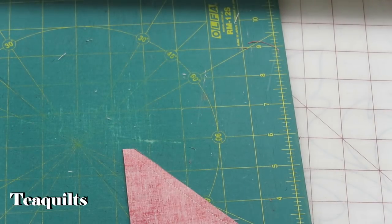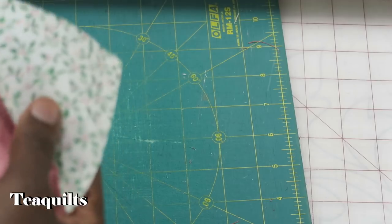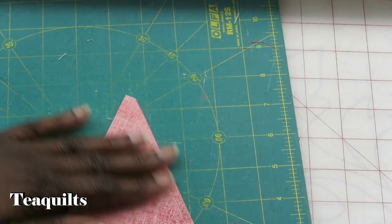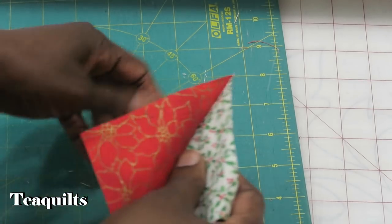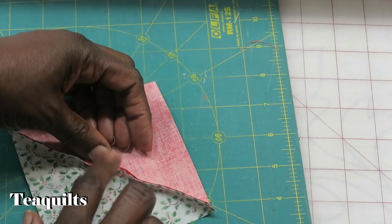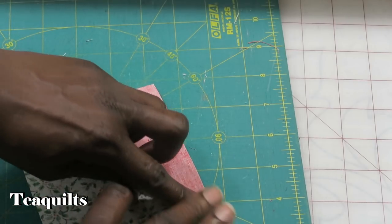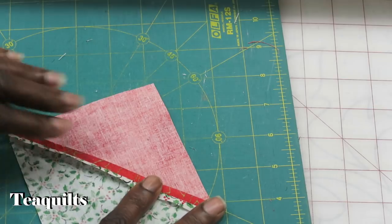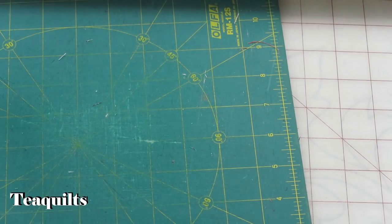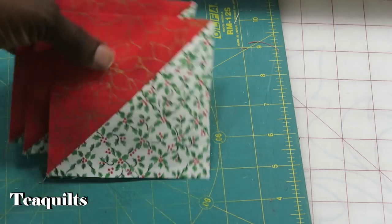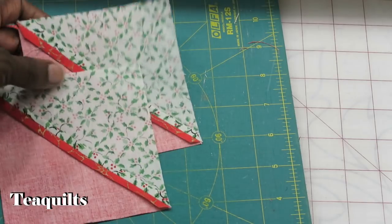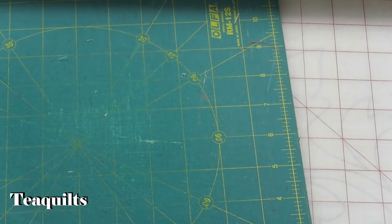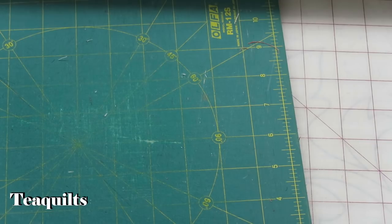So now at this point you can go set your seam and then press your half square triangles open. I would first set my seam with the iron this way before opening, and then I would go ahead and open this half square triangle. I just like to press my seams in my half square triangles open. I've already done that step with the remaining units, so you can see where they're all pressed open.